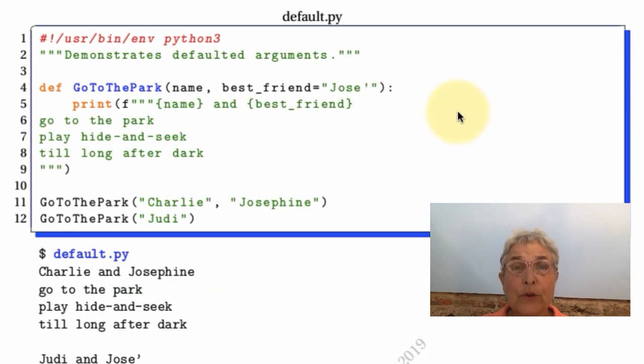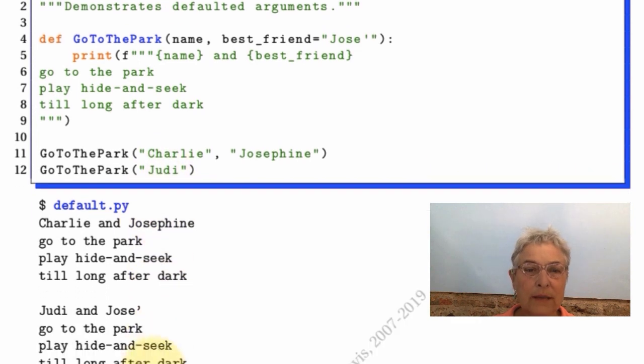We want to zip through two more great features of Python function definitions before we go to the labs. The first one is that you can provide a default. Here I make a GoToThePark where I have a required first argument: who's going to the park? And then the best friend either comes in as the second argument or Jose is waiting there as the default. So when Charlie goes in with Josephine we see that, but when Judy goes in on her own, Jose has been waiting.